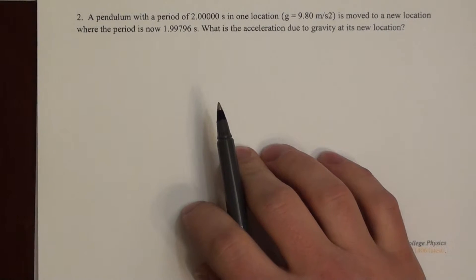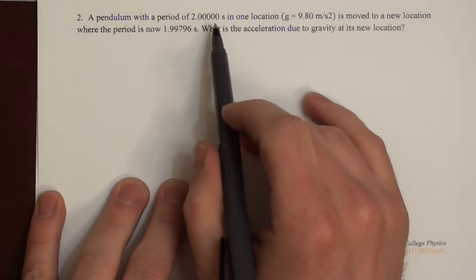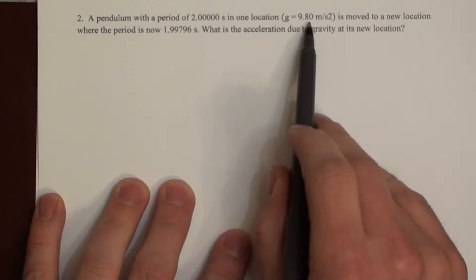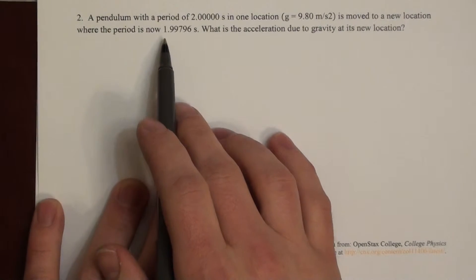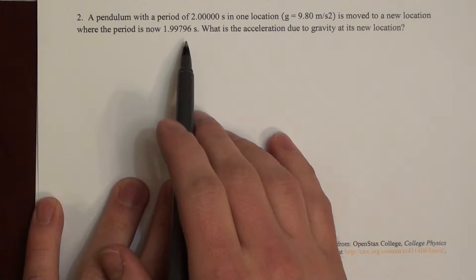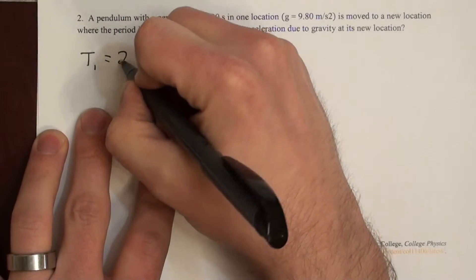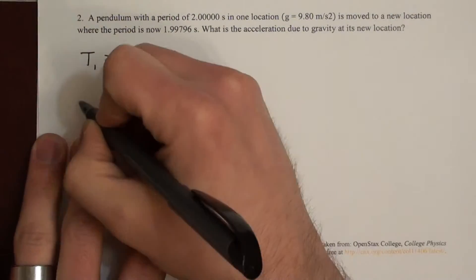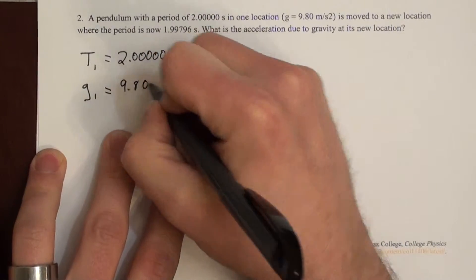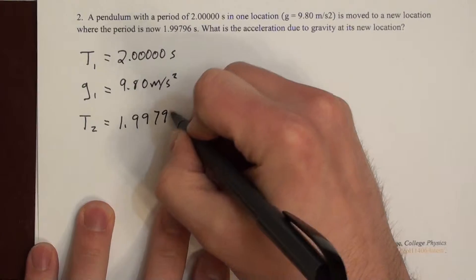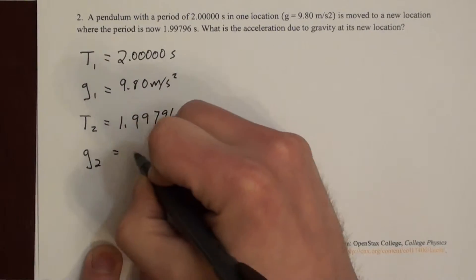The second problem says we have a pendulum with a period of 2.00000 seconds where g is exactly 9.80 m/s². It's moved to a new location where it has a new period of 1.99796 seconds — very close to 2 but not exactly. The question is: what is the acceleration due to gravity at the new location?